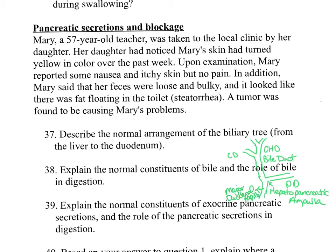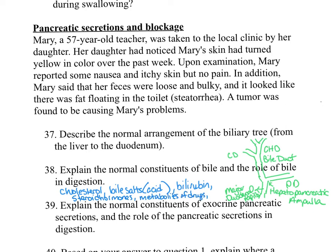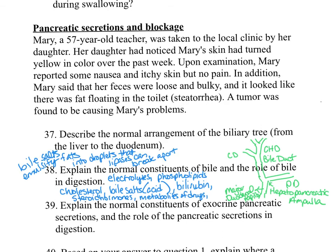Question thirty-eight: explain the normal constituents of bile and the role of bile in digestion. Bile contains cholesterol, bile salts (which are acids), bilirubin, steroid hormones, metabolites of drugs, electrolytes, and phospholipids. One of the main roles of bile is that the bile salts emulsify fat into small droplets, which can then be digested by pancreatic lipase enzymes.